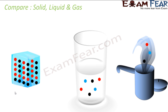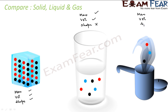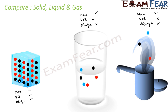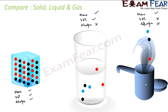Let's compare the three states. In the case of solid, mass, volume, and shape are all constant. In the case of liquid, mass and volume are constant, but shape is not constant. In the case of gas, mass is constant but both volume and shape are not constant.